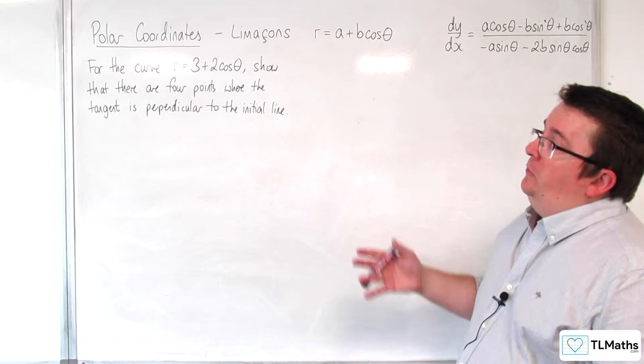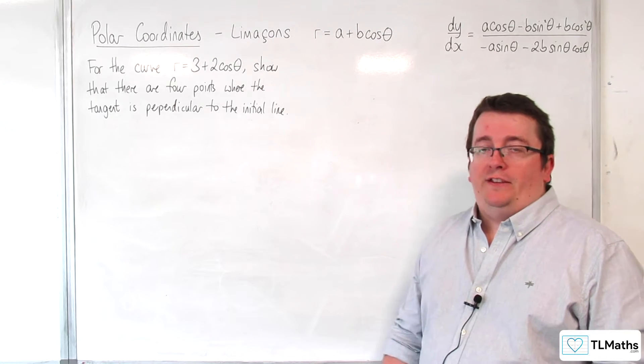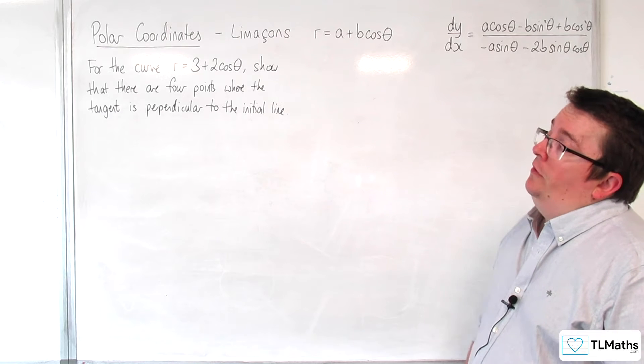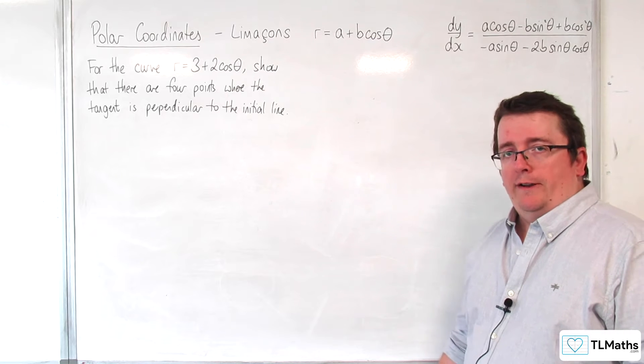In this video, we're going to be considering the curve r equals 3 plus 2 cosine theta, and we're going to show that there are four points where the tangent is perpendicular to the initial line.